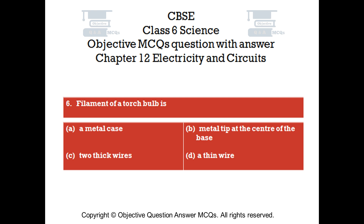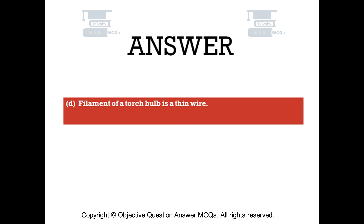Question number 6. The filament of a torch bulb is: Option A — a metal case; Option B — a metal tip at the center of the base; Option C — two thick wires; Option D — a thin wire. The right answer is option D. The filament of a torch bulb is a thin wire.